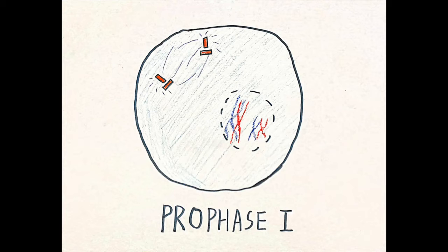Diakinesis: In this phase, a lot of observable changes occur. The nucleoli vanish. The nuclear membrane disappears into vesicles and meiotic spindles begin to form.